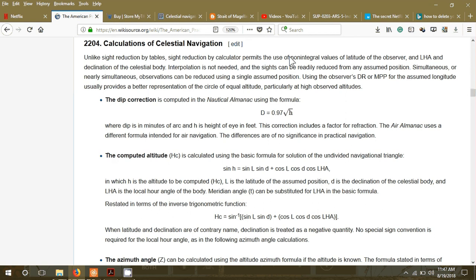Your line of position is found by solving a part of two different triangles. Both are on the Earth. Actually, one is on the Earth and one is partially in the Earth.